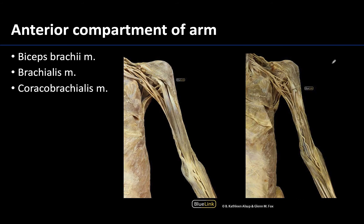Moving now to the arm — as discussed in the last session, there's an anterior and a posterior compartment of the arm. When looking at a superficial dissection of the anterior compartment, the most prominent muscle is the biceps brachii. The most distinguishable feature of the biceps brachii is that the proximal portion has two heads, or two proximal tendons — a short head and a long head — which come together to share a common belly and have a common distal attachment.